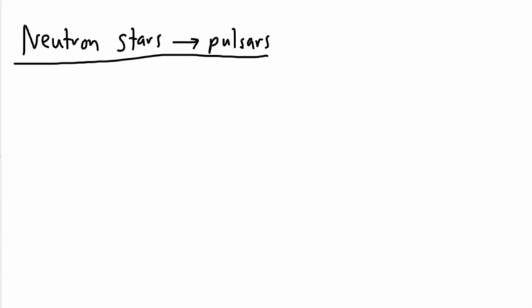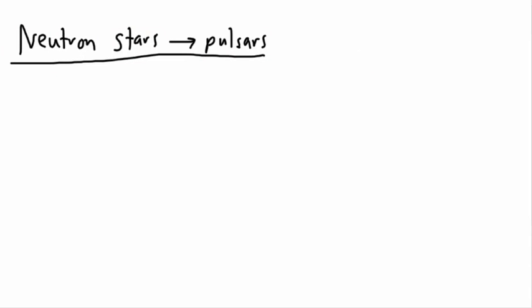Not only can you have neutron stars, but it turns out neutron stars actually are pulsars. I'm going to explain this in a second. Neutron stars actually spin very fast.